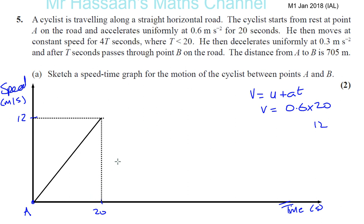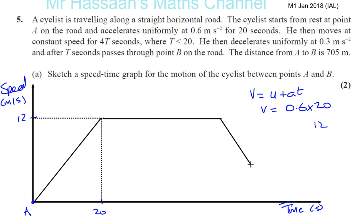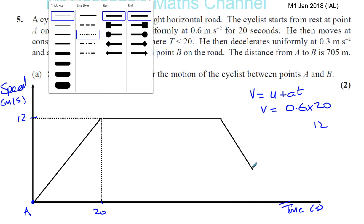He then moves at constant speed for 4T seconds, where T is less than 20, so he continues horizontally for quite a long way. He then decelerates uniformly at 0.3 meters per second squared. It doesn't say he decelerates to rest, just that he decelerates at 0.3 meters per second squared. So we draw a slightly steeper deceleration until he reaches point B — we don't know if he's come to rest or not.